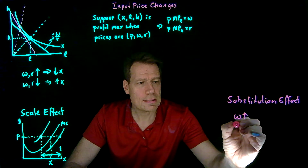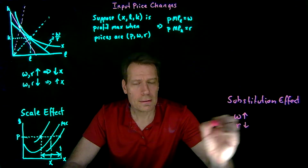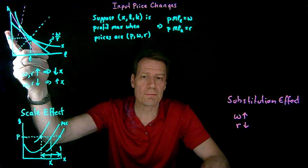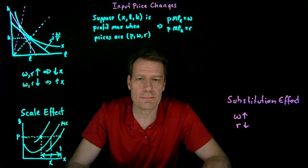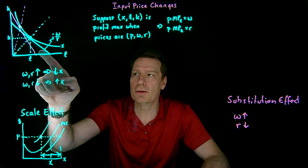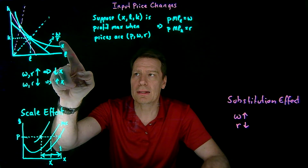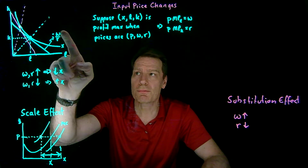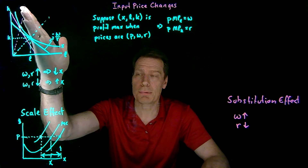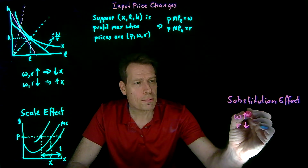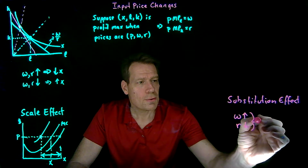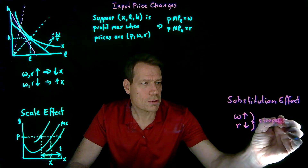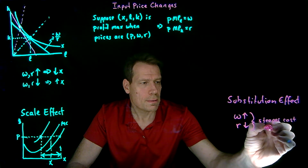The same thing is going to happen if we see a decrease in the rental rate. If the rental rate decreases, capital has become cheaper, so we're going to substitute towards capital and away from labor. You can see it in the slope of the isocost budget: if the rental rate decreases, then what's in the denominator falls, which means the fraction is increasing in absolute value — we get a steeper slope. So these input price changes give rise to steeper cost-minimizing rays.